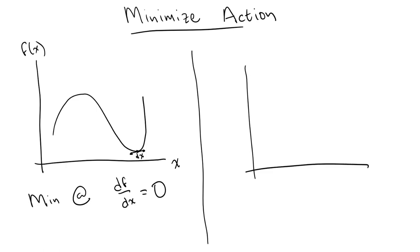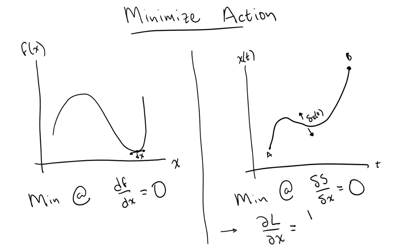Similarly, the action is minimized only when it does not change with a small variation of the paths that the action depends on. Sparing you the full derivation, if we write this in terms of the Lagrangian, we get the Euler-Lagrange equations of motion of a particle which are equivalent to Newton's second law.